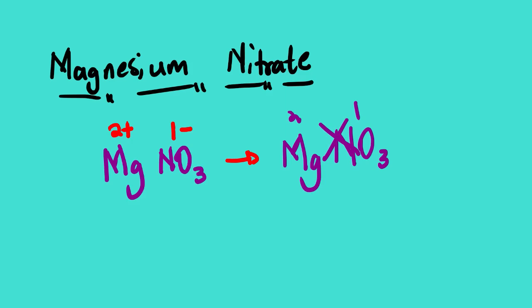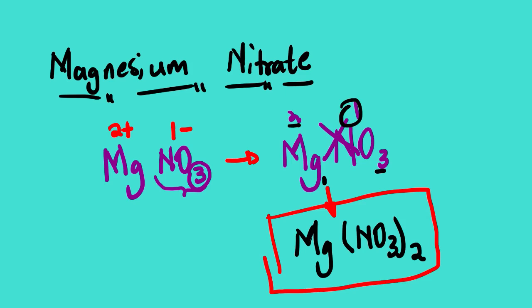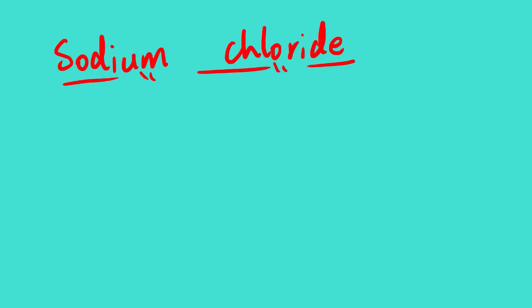Taking it step by step: magnesium is 2 and nitrate is 1. When we cross multiply, since this polyatomic ion already has its own subscript, we need to introduce brackets. We have 1 × 1 = 1 for magnesium, so we just write Mg. For nitrate, we cannot say 2 × 3 — we must not tamper with the NO₃. So we introduce a bracket, write NO₃ inside, and put the 2 outside: Mg(NO₃)₂. This is the molecular formula of magnesium nitrate.